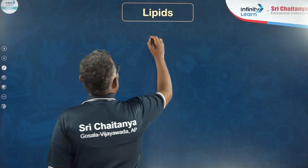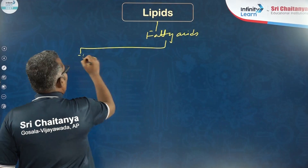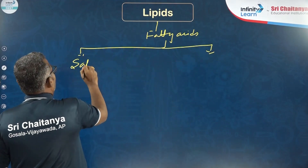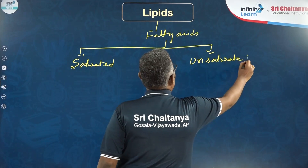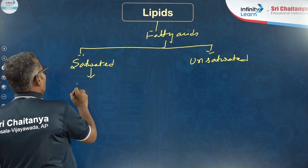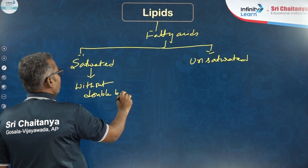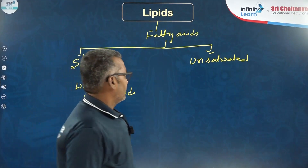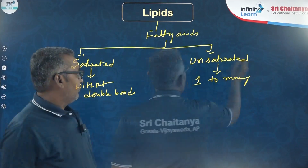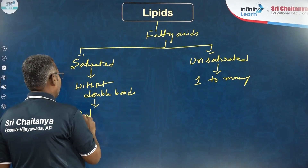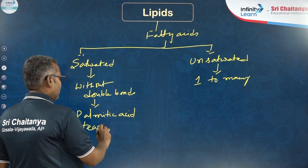Fatty acids are of two kinds: saturated fatty acids and unsaturated fatty acids. Saturated fatty acids have no double bonds. Examples of saturated fatty acids include palmitic acid and stearic acid.